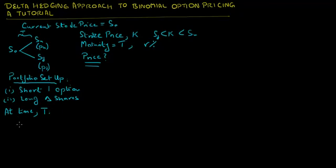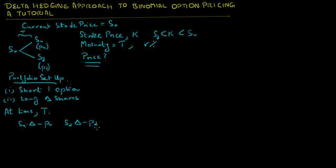At time T, if the stock price goes up to SU, the value of the long stock position is SU times delta. Since we are short the option, the value of the option position is negative PU, the payoff of the option if the stock price goes up. Similarly, if the stock price goes down to SD, the value of the stock position is SD times delta, and the value of the option position is negative PD, the payoff if the stock price goes down to SD.